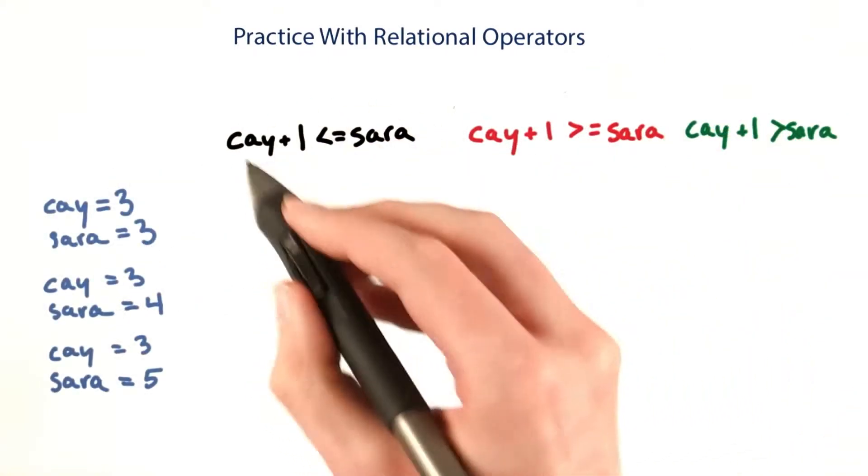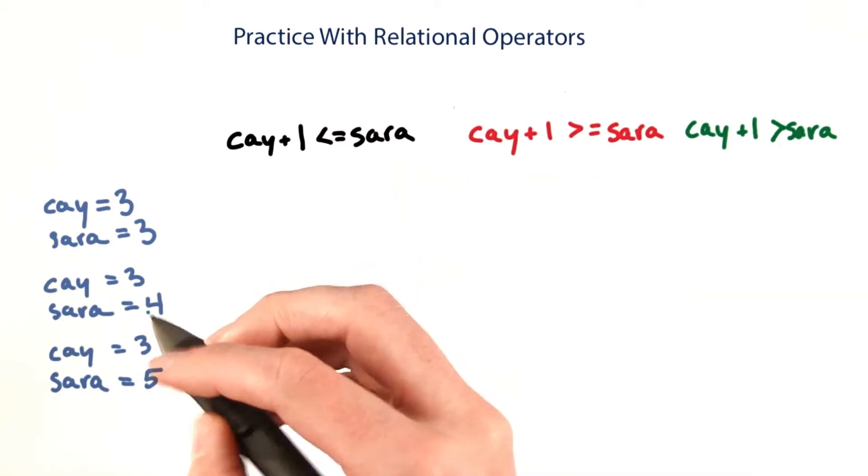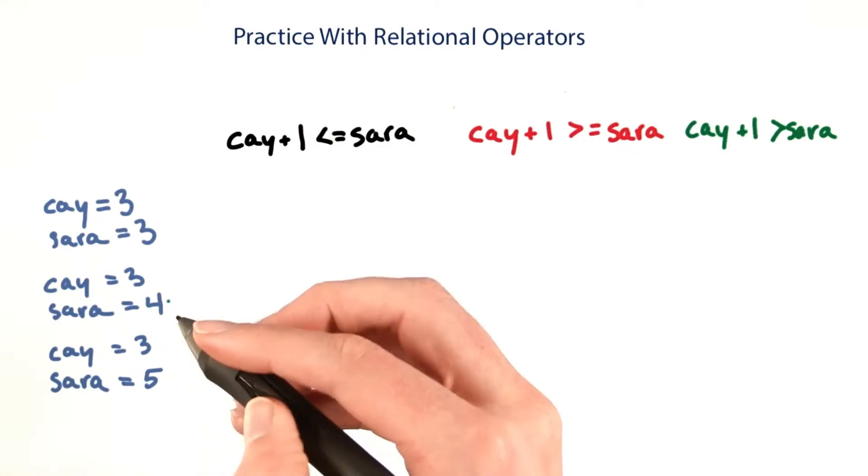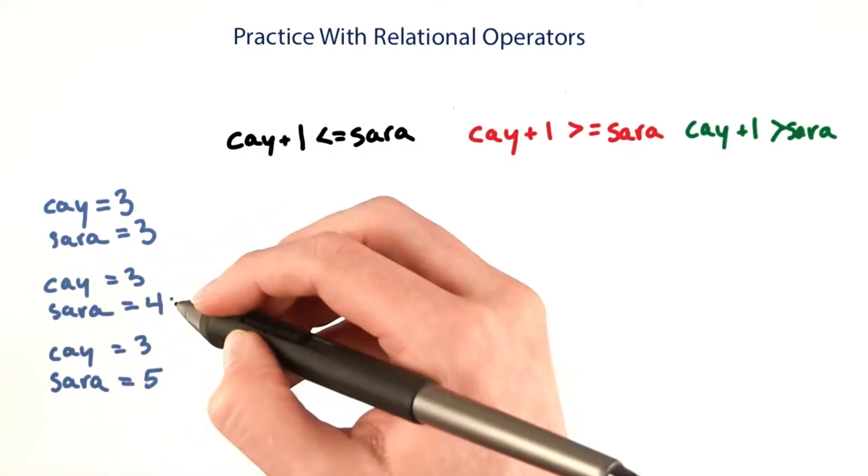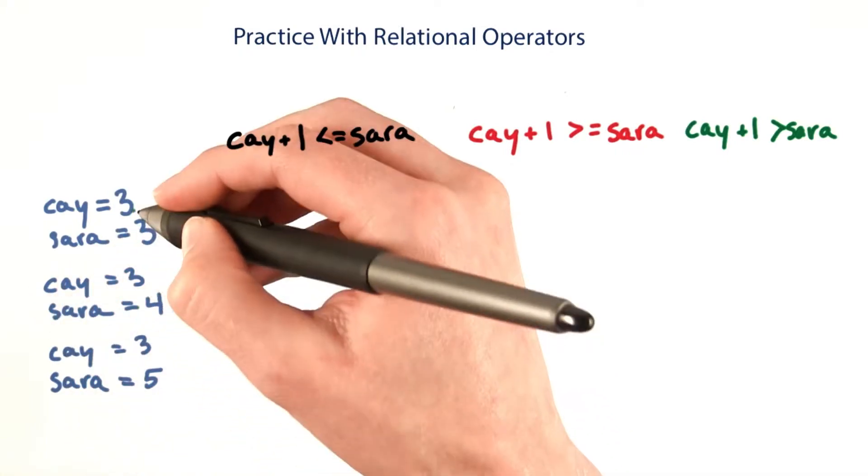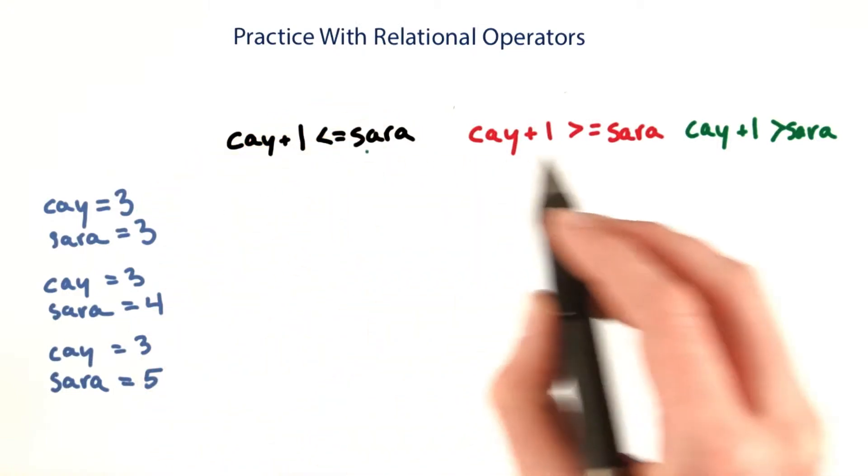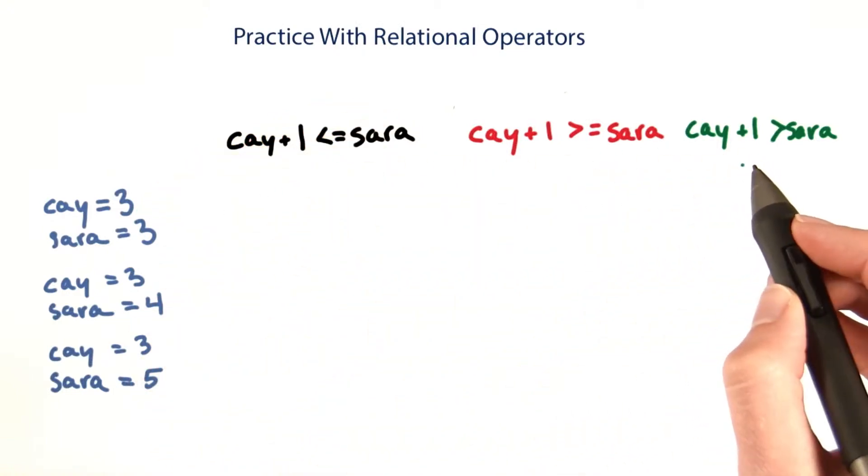Our original expression was chi plus 1 is less than or equal to Sarah. We found that when chi has 3 Twitter followers and Sarah has 4 Twitter followers, that's the boundary. So I'm using that case and two cases, one on each side of that boundary, to compare these three conditions to see which ones are opposites.